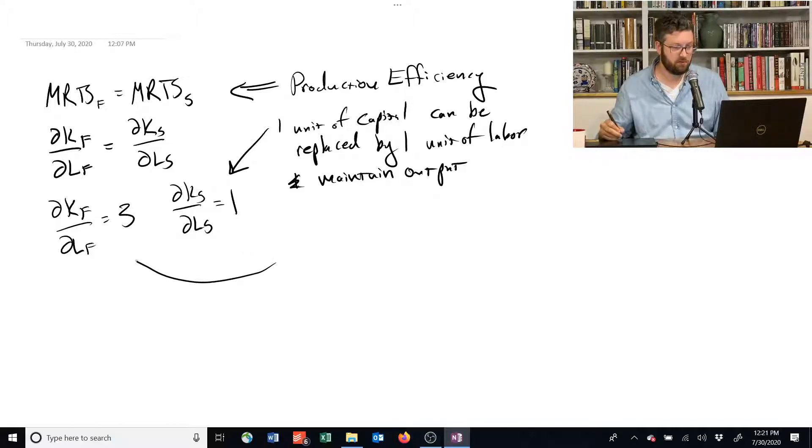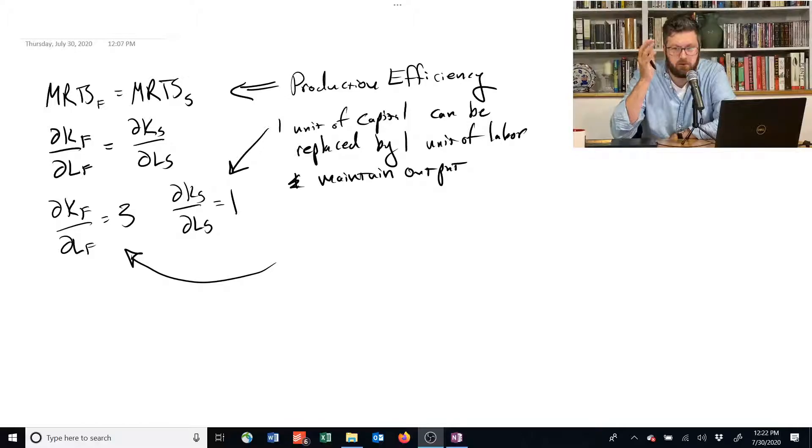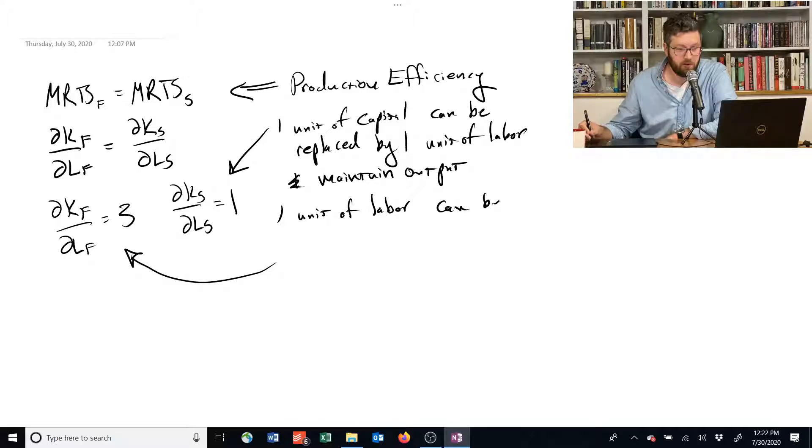For this guy over here, this is saying that the slope of the isoquant is 3, meaning if you give up 1 unit of labor, you need 3 units of capital to stay on the same production level. So, 1 unit of labor can be replaced by 3 units of capital.